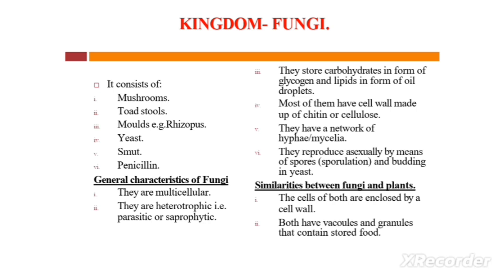Number four: they have a network of hyphae or mycelia. Number five: the mode of reproduction is asexual, by means of sporulation and budding in yeast.